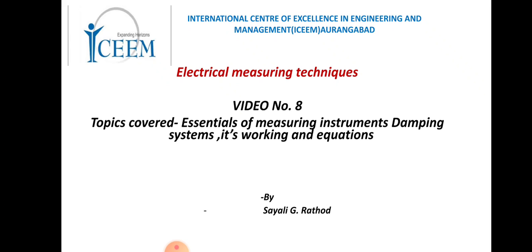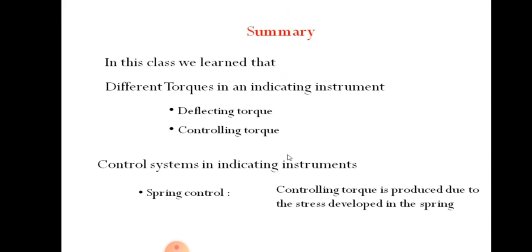In the previous lecture, we studied part of the same topic — essentials of measuring instruments — in which we saw three types of torques. The third torque, the damping torque and its system, we are going to cover in today's lecture. In the previous video lecture, we studied the deflecting torque and the controlling torque. Total three types of torques are there: deflecting, controlling, and damping. Today we will see the damping torque.